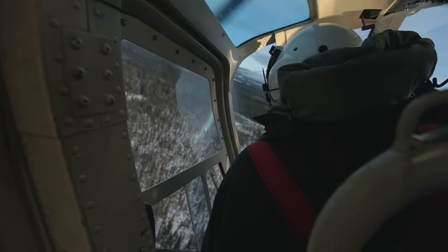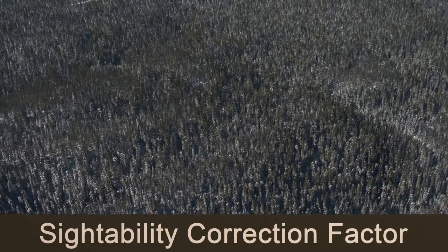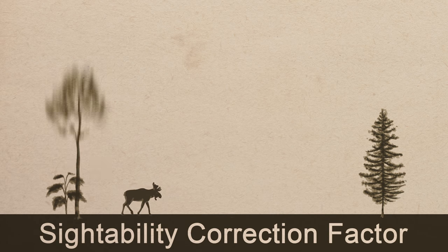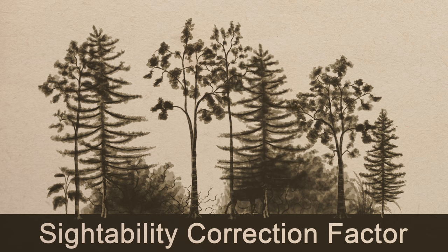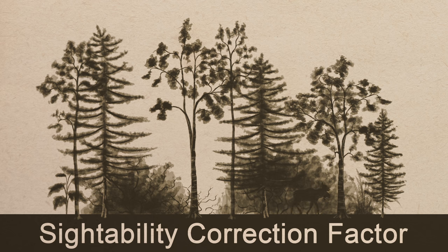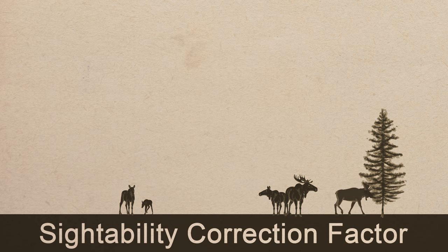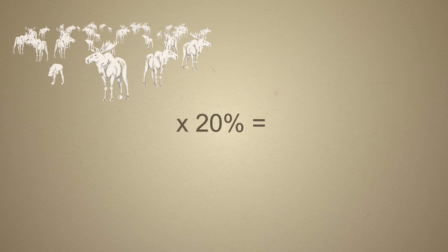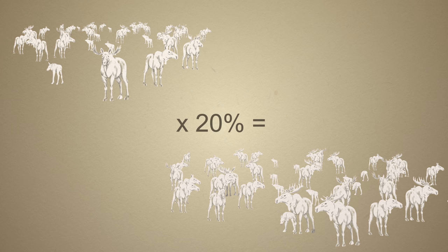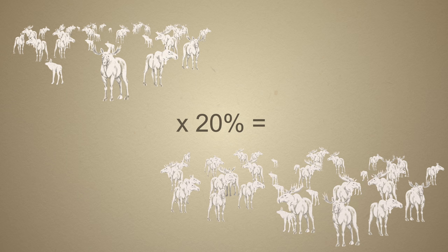There are always some moose we can't see, because trees and bushes are blocking them from our view. We account for these hidden moose using something called a sightability correction factor. They're all based on the idea that we're more likely to see moose in open areas than in dense vegetation. Therefore, moose we can see in dense vegetation count for more than moose we see in open areas. For example, if we estimate 800 moose in the survey area but we think we've missed seeing 20% of the moose that are actually there, we'd estimate there are actually 1,000 moose — we just couldn't see 200 of them.